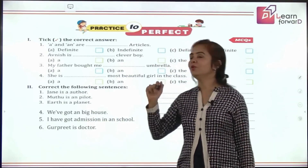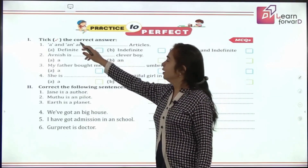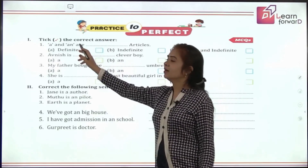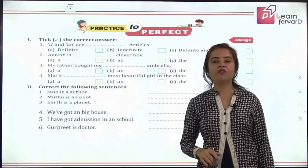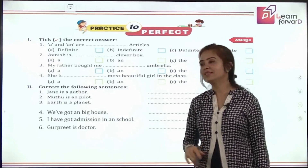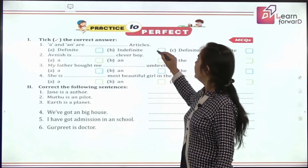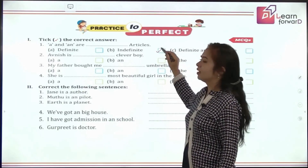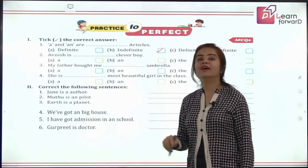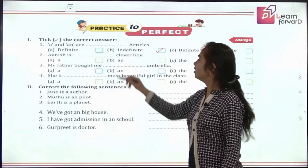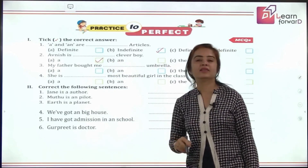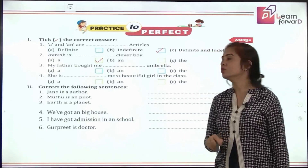It is time to do the exercise. 'A and AN are what type of articles?' — Yes, they are indefinite articles. 'Avneesh is ___ clever boy.' — We are talking about one boy and it is a consonant sound: a clever boy.